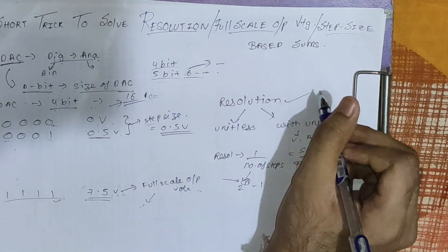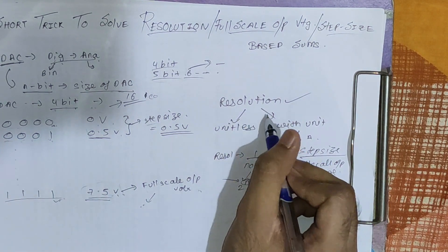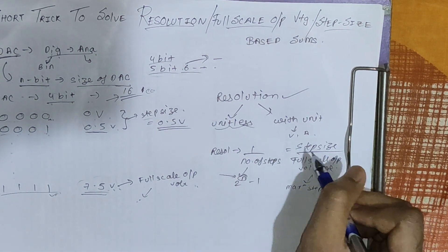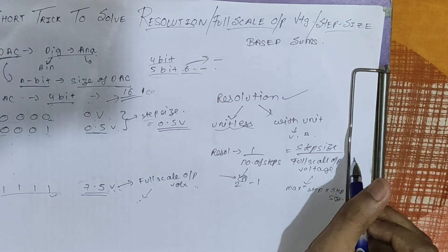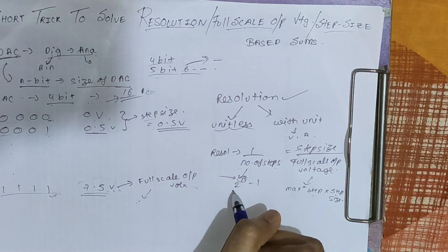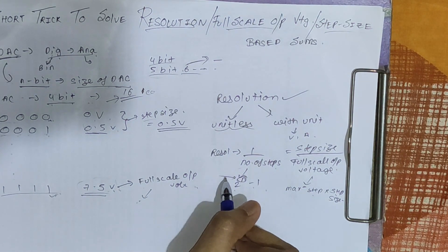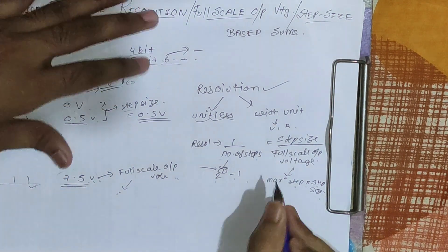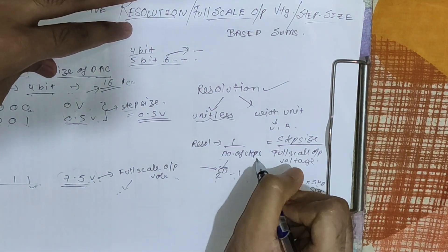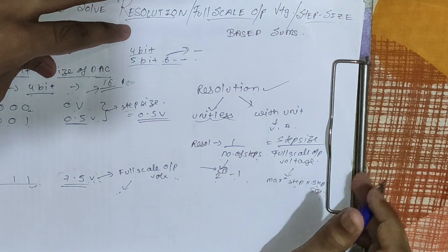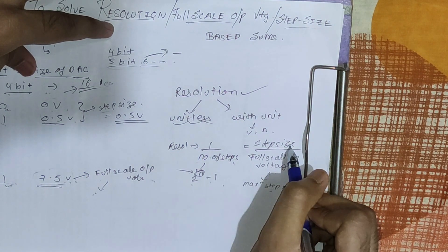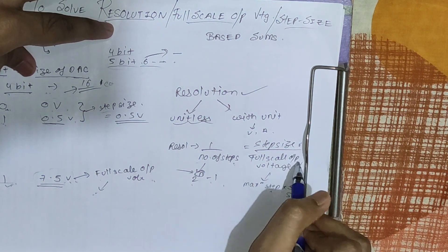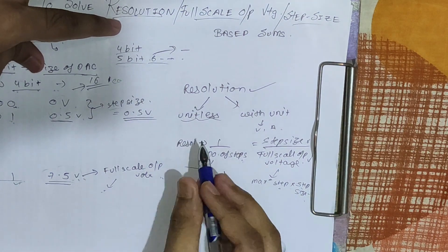One more term is resolution. Resolution can be unit-less or with a unit. The formula for unit-less resolution is 1 upon number of steps. Another formula is step size upon full-scale output voltage. If you want to calculate the number of steps, the formula is 2 raised to N minus 1, where N is the size of the DAC. The full-scale output voltage formula is maximum step multiplied by step size. This formula is unit-less because number of steps has no unit, and in the other formula, step size and full-scale output voltage both have units of volts which cancel out.